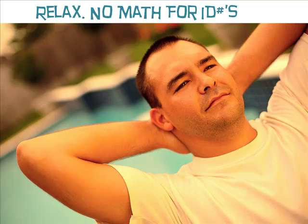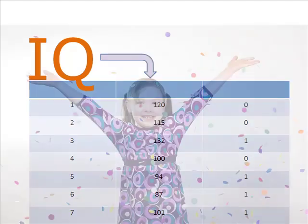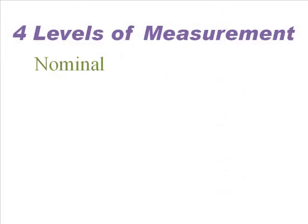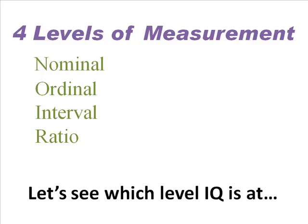In the IQ column, the numbers represent how many test items the person passed. We have more opportunity for number crunching here. These are not just identifiers. The numbers have some math value. Not counting nominal — using numbers as names — there are three types of math numbers: ordinal, interval, and ratio.